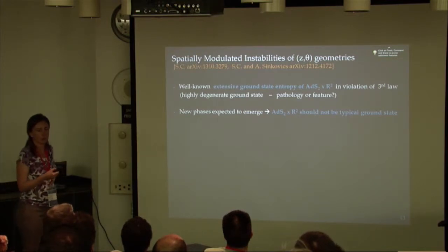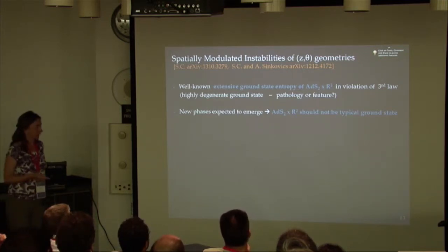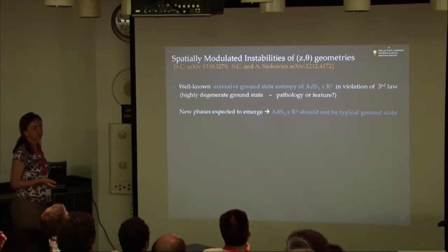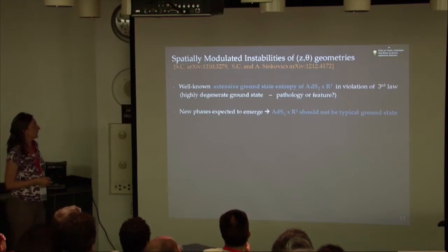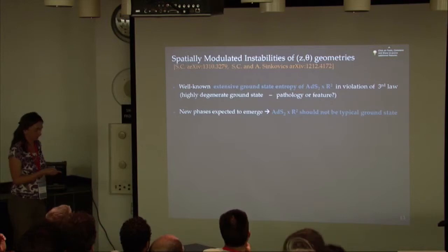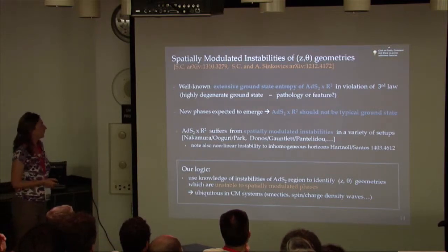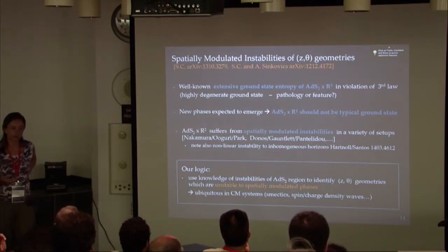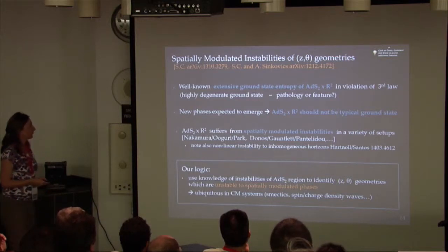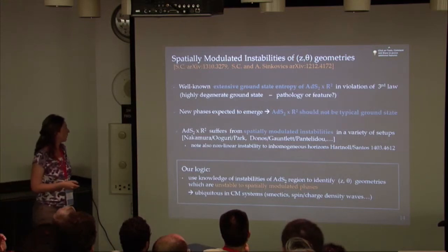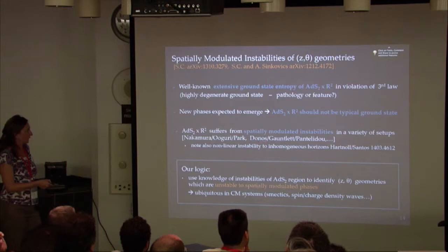Now that you have this infrared AdS2 times the plane, there has been a puzzle associated with these geometries. AdS2 has a well-known extensive ground state entropy. When you go to zero temperature, you find the entropy remains finite. This is indicating you should expect new phases to emerge at low temperatures. Whether this extensive entropy is actually a pathology or a feature is an interesting question. Violating the third law is telling you that you should expect to find new geometries at least for some range of parameters. AdS2 should not be your typical ground state.